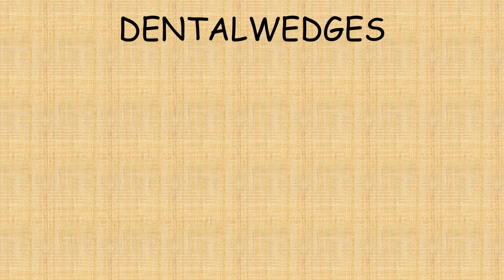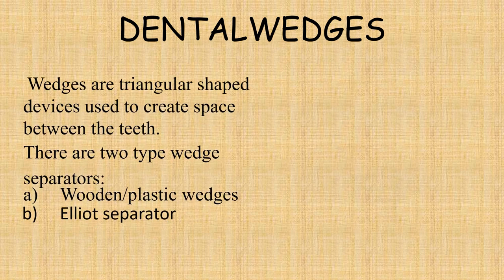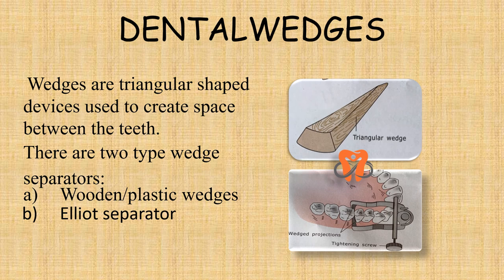What are dental wedges? Wedges are basically triangular shaped devices used to create space between the teeth. There are two types of wedge separators: wooden or plastic wedges which we routinely use in our clinics, and a device known as the Elliot separator.